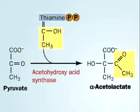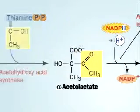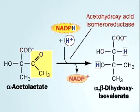Leucine synthesis begins with the addition of an acetyl group from thiamine pyrophosphate to pyruvate, forming alpha-acetolactate. Using NADPH plus H+, that molecule is reduced, forming alpha-beta-dihydroxyisovalerate.